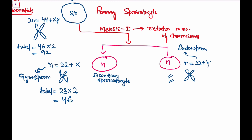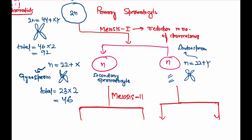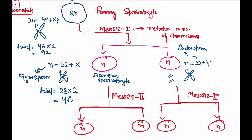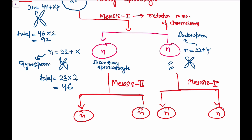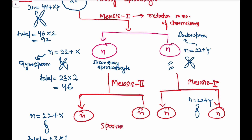Both secondary spermatocytes undergo Meiosis II. In Meiosis II, the number of chromosomes is unchanged but the number of chromatids is reduced — similar to mitosis. We again get haploid cells: two cells with genotype n = 22 + X and two with n = 22 + Y.